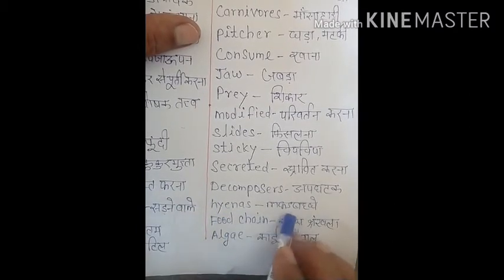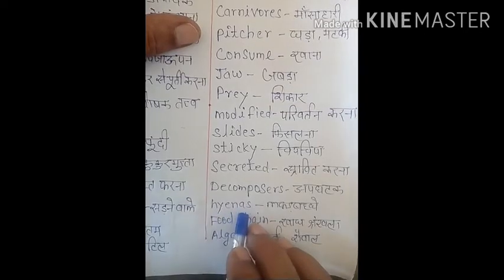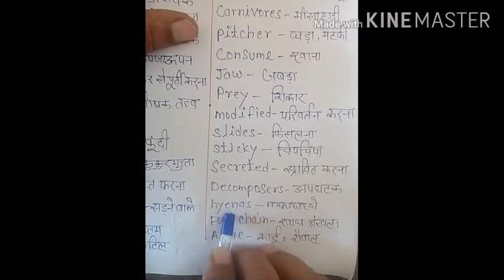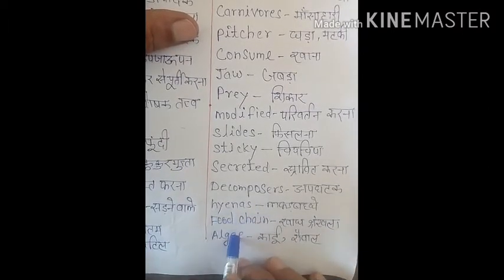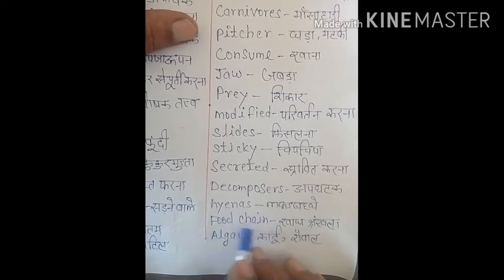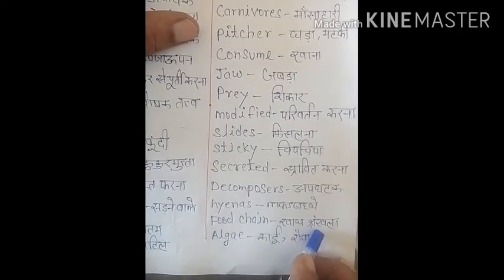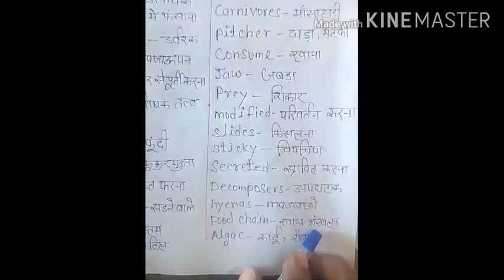Jaise 'lakar bagha' — ek word hai Hindi mein hyena ko lakar bagha kehte hain. Hyena haj. Thik hai, dekho uski picture YouTube pe. Next word is 'food chain', F-O-O-D C-H-A-I-N. Food chain means 'khadya shrankhala'. Thik hai, food chain kya hoti hai?